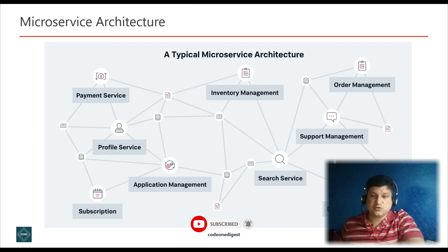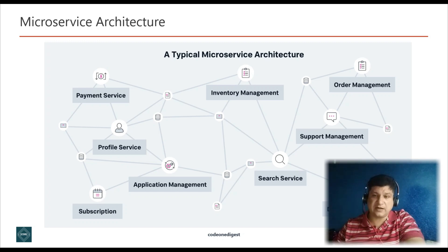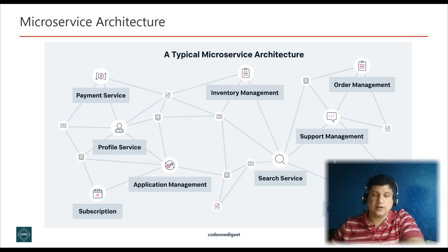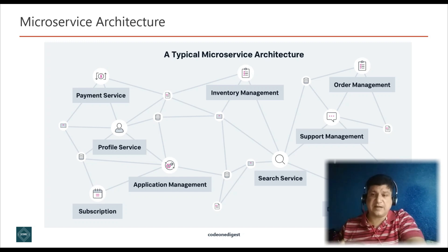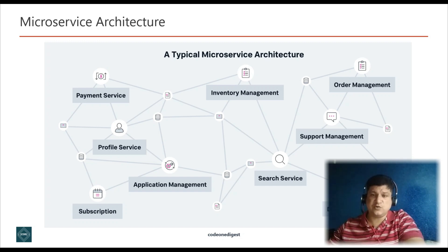We need a trace ID so that we log it along with microservice logs, and then in a log aggregator tool like Splunk or log analysis we can search using this trace ID. It will give us logs from multiple services with that trace ID, and then we can analyze how a user journey began, went through multiple services, and ended with success or error. In microservices, a transaction can span through multiple services, so a unique trace ID lets us trace the user journey across all of them.